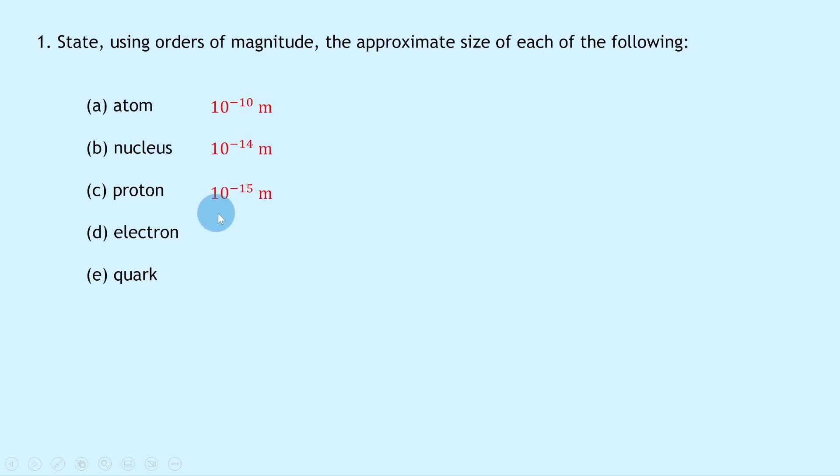The size of the electron is thought to be even smaller at less than 10 to the minus 18 meters, and lastly the size of the quark is thought to be less than 10 to the minus 19 meters, i.e., the smallest quantity in the list here.